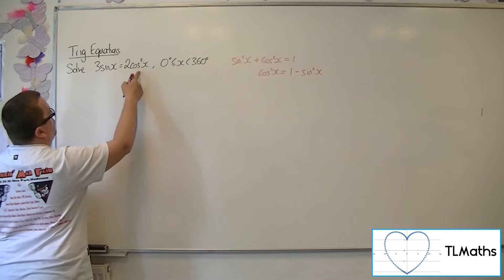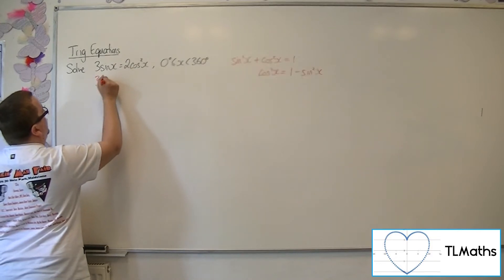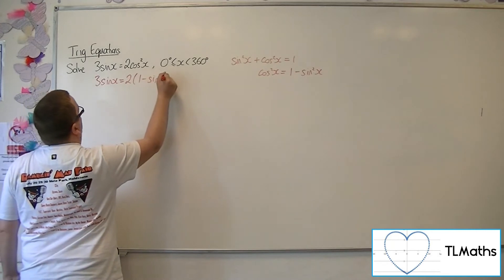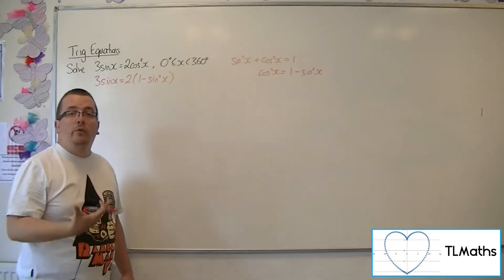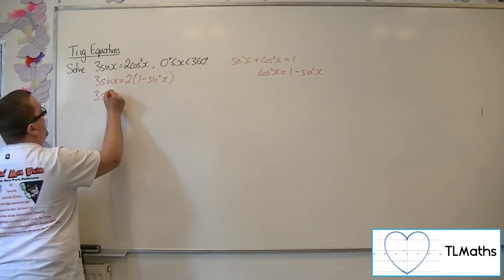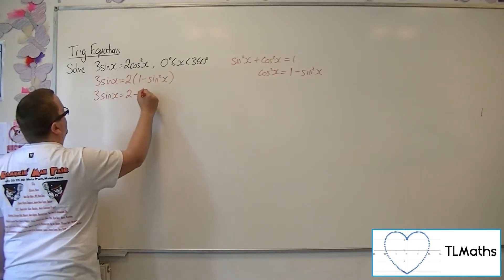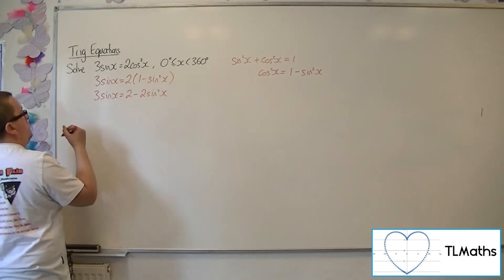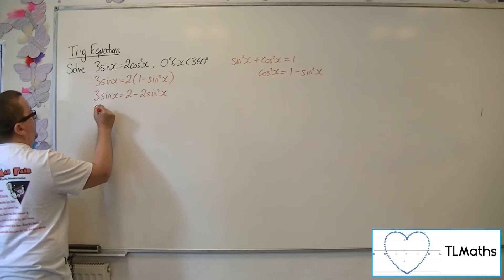That allows me to replace the cosine squared with 1 minus sine squared and I now have a quadratic equation that just involves sine. Expanding the right-hand bracket, I can then rearrange everything, get it all onto the left-hand side of the equation.